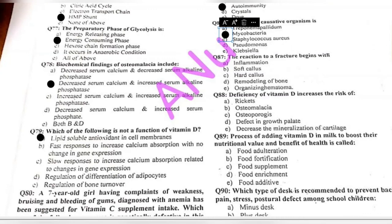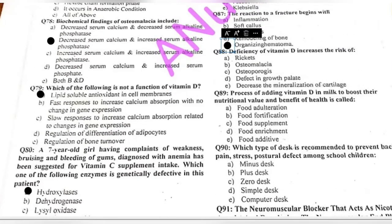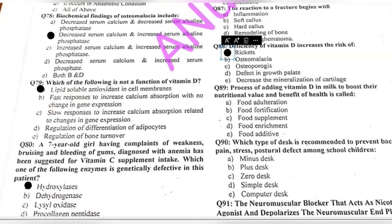Question 87: the reaction to a fracture begins with — inflammation, soft callus, hard callus, remodeling of bone, or organizing hematoma? The sequence is: organizing hematoma, then inflammation, then soft callus formation, then hard callus formation, and finally remodeling of the bone.